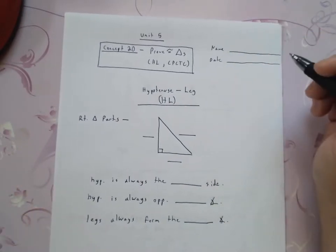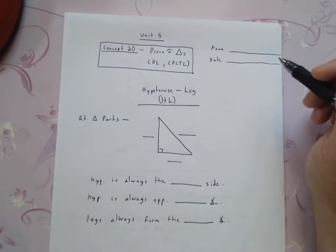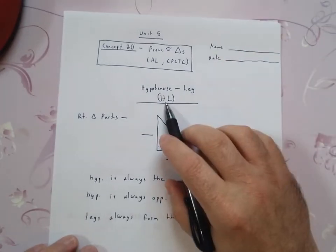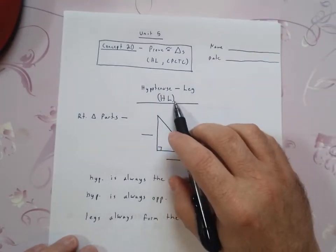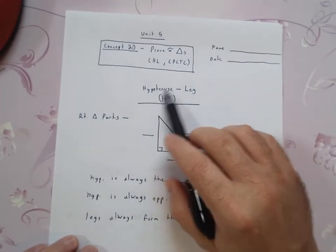All right, and the last concept, you guys, concept 19. You learned about side-side-side, side-angle-side, angle-angle-side, and angle-side-angle. Well, there's actually one more way of proving triangles congruent, and that's what we call HL. And we call that hypotenuse leg.